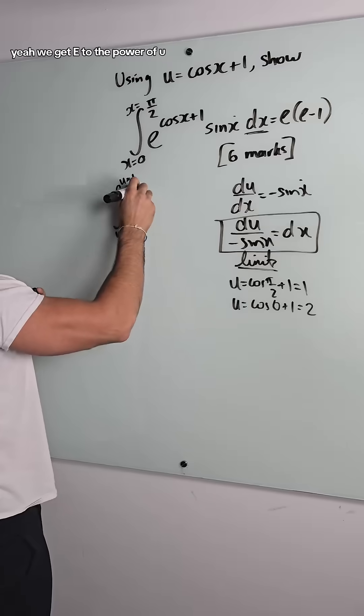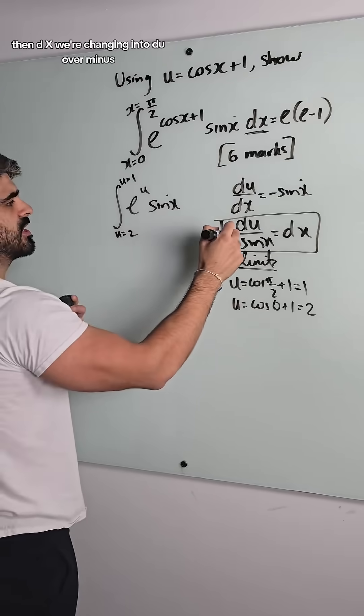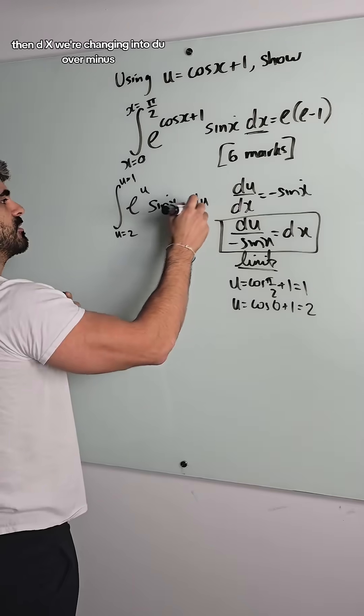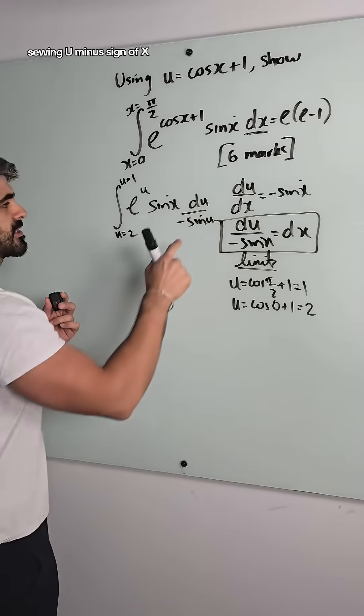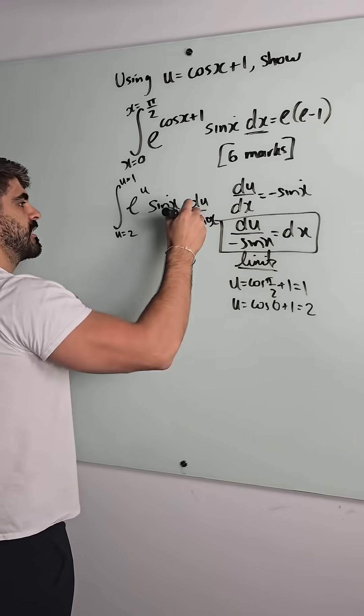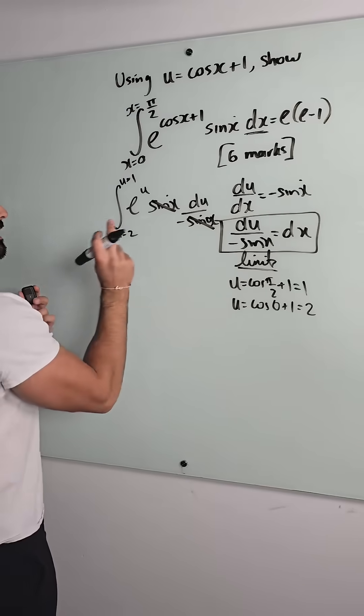Yeah, we get e to the power of u. Then we have sin x. Then dx, we're changing into du over minus sin x. Minus sin x. Now, the sin x is cancelled. This is why I was saying at the beginning, do not force any substitutions.